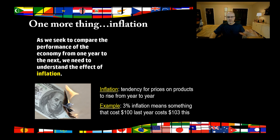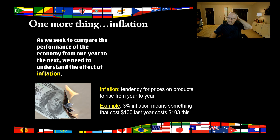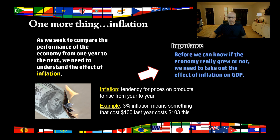For example, if inflation was three percent this year over last year, then something that cost you $100 last year would cost you $103 this year. Most of the time when inflation is in the three to five percent range, nobody thinks too much of it. But you have to account for it when figuring out whether your economy is growing, because inflation can make it look like it's growing when it's actually not. The opposite of inflation is deflation — when prices go down over time. We saw a lot of deflation in the Great Depression, but it's uncommon.